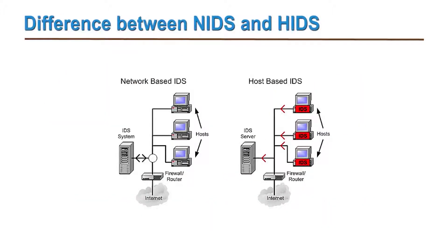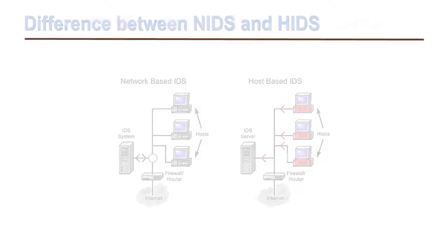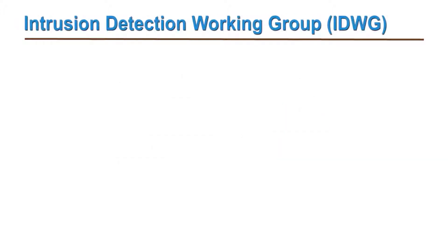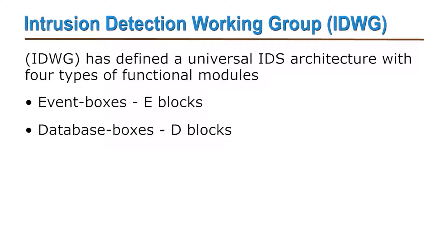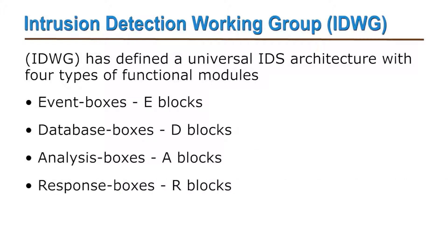The subtle differences between NIDS and HIDS are clearly indicated in the figure. There is an intrusion detection working group known as IDWG, which has defined a universal IDS architecture with four types of functional modules: event boxes or E-blocks, database boxes or D-blocks, analysis boxes or A-blocks, and response boxes or R-blocks.